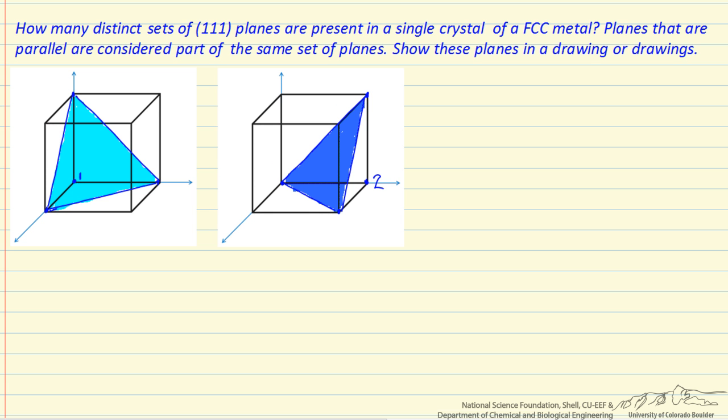Here I have picked this point 2 as our origin, and then I have intercept 1, 1, and 1 for the three axes. And we can see we have a plane that is not parallel to the first one, so we have at least two. So let's now pick a third location for our origin.